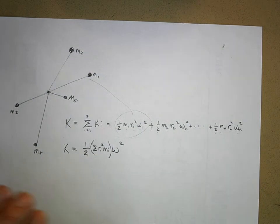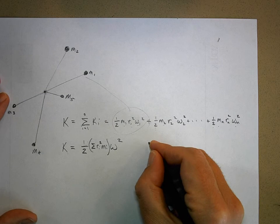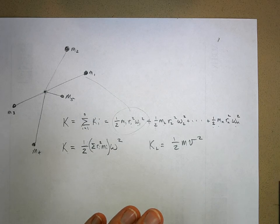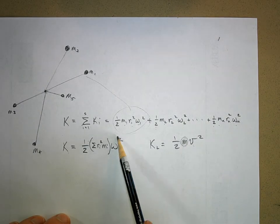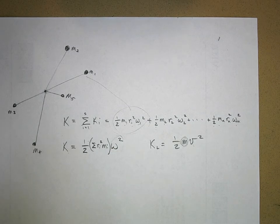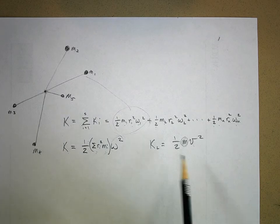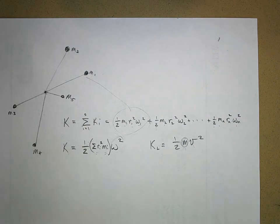Now we have KE = ½[Σmᵢrᵢ²]ω², which is analogous to the linear form KE = ½mv². The ω² plays the role of v², and the bracketed sum plays the role of mass. Think of it as 'rotational mass' — it tells you how much mass this system has in a rotational sense. It contains mass but also the r² factor reflecting how far each mass is from the axis.